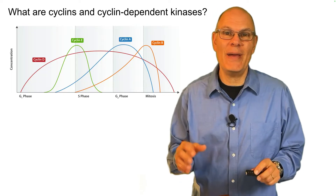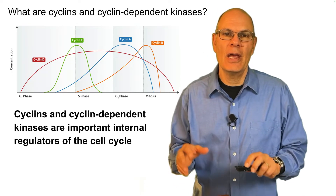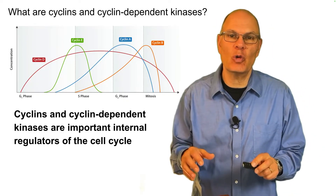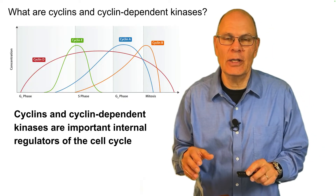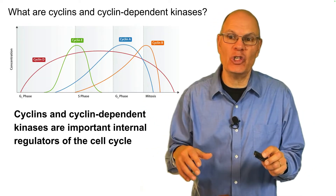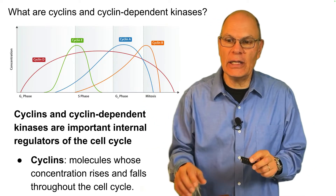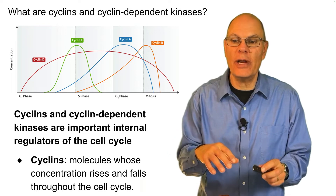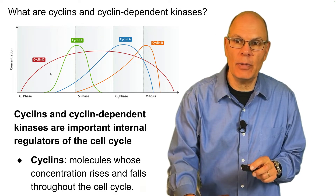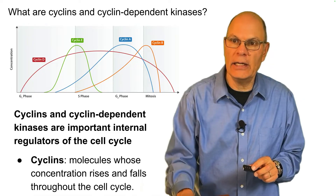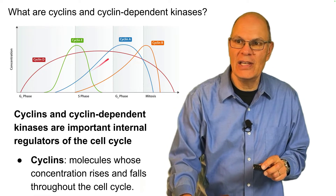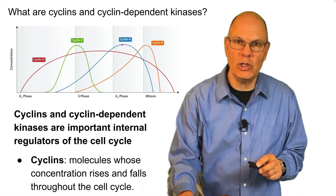Cyclins and cyclin-dependent kinases are important internal regulators of the cell cycle. The cell cycle is regulated by outside signals, but also by internal conditions. Cyclins are molecules whose concentration rises and falls throughout the cell cycle. For example, cyclin E rises right before the S phase, and cyclin A rises right before G2. The cell has mechanisms to read the level of these cyclin concentrations.